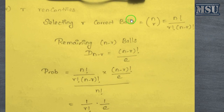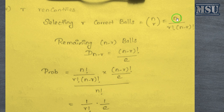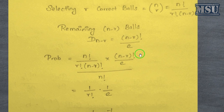For exactly r rencontres, we select r correct balls using nCr, where nCr = n! / (r! × (n−r)!). The remaining n−r balls must all be incorrectly placed, so we use the derangement of n−r, which equals (n−r)!/e.